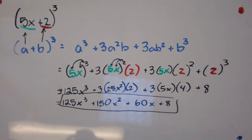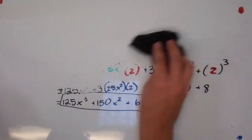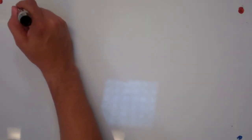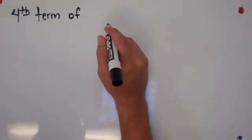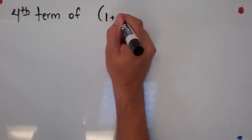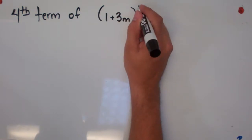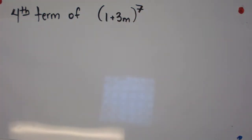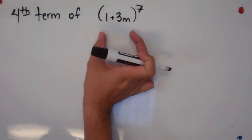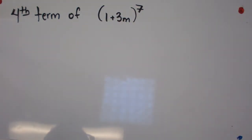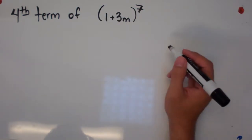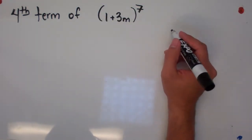Let's work through another example. This one won't be about expanding, but will deal with the idea of finding a specific term. The problem is: find the fourth term of the binomial one plus three m to the seventh power — meaning we're multiplying one plus three m seven different times. We're going to get a huge binomial expansion. What I'm going to do is first write out Pascal's Triangle to figure out that binomial expansion.